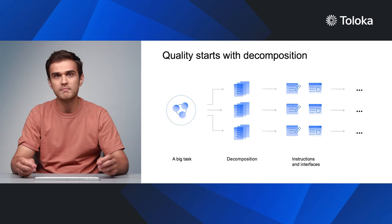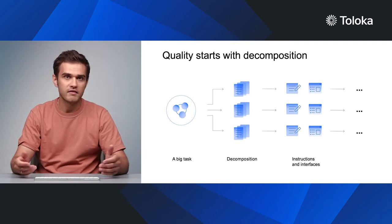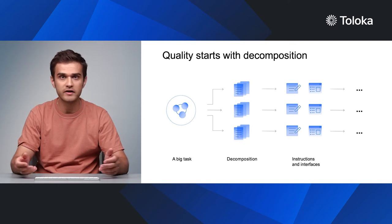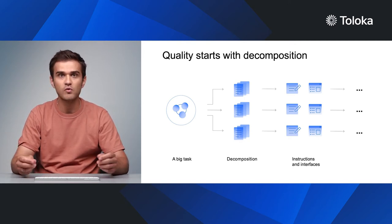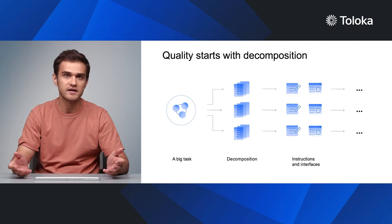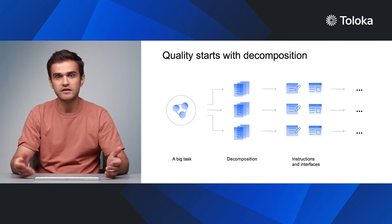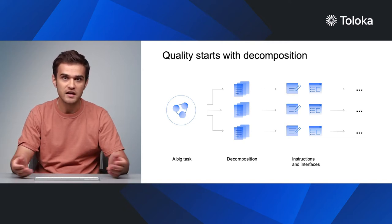Designing quality control is a multi-stage process. It starts with thinking through the task's logic and ends with smart aggregation of the results. The first steps involve breaking down the task, putting together good instructions, and designing a clear and usable interface. We discussed how to deal with these challenges in previous videos.